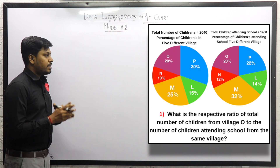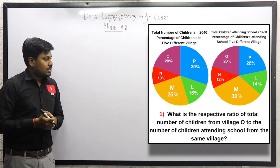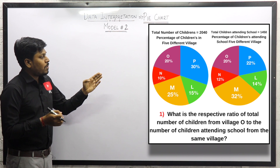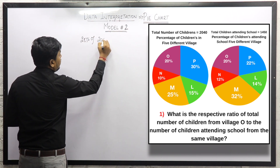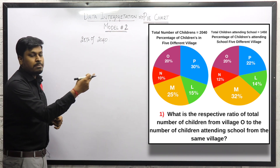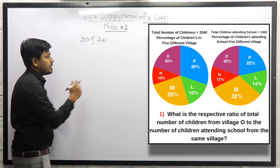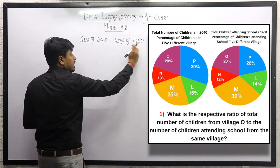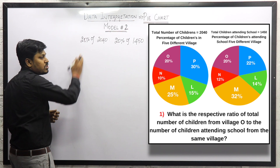Question number 1: What is the respective ratio of total number of children from village O to the number of children attending school from the same village? Our target is to find the ratio. According to chart number 1, village O is 20%, so 20% of 2040. From chart number 2, village O is also 20%, so 20% of 1450 are attending school.